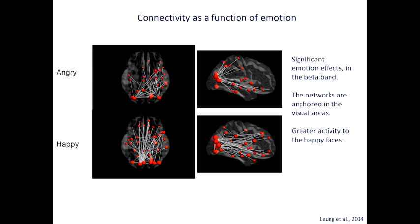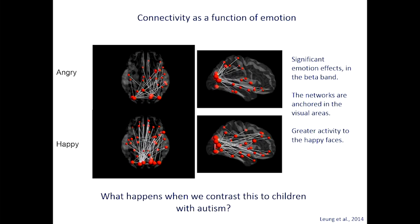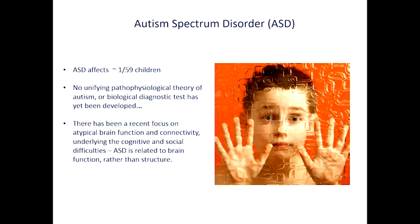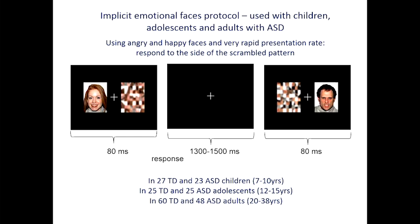Autism affects about one in 59 children — so out of every two classrooms, there'd be one child with autism. There's no unifying pathophysiological theory, no biological marker or test; it's a clinical diagnosis. There's been a recent focus on atypical brain function and connectivity in autism, because it's really the function of the brain that underlies this disorder, not the structure. We ran exactly the same task in children, adolescents, and adults with autism — pressing to the scrambled face, so it's not difficult for them. The error rate is close to zero for them as well as for controls.